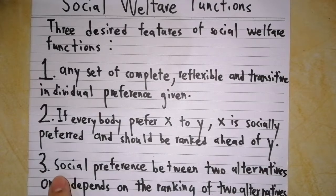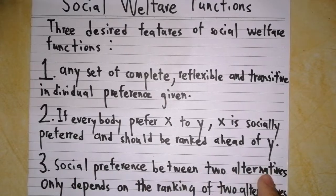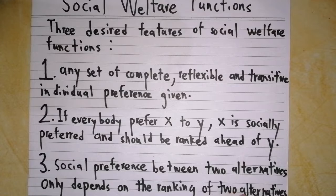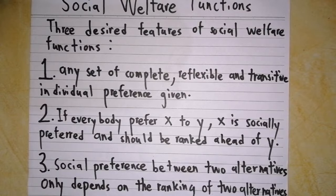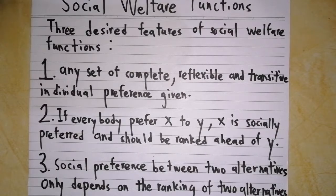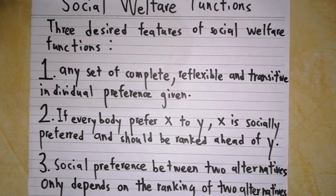And the last one is social preference between two alternatives only depends on the ranking of the two alternatives. This means when there are only two allocations such as X and Y, social preference ranking should only depend on these two allocations instead of the others.